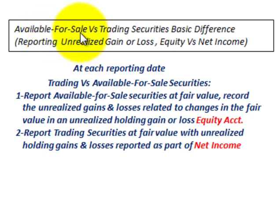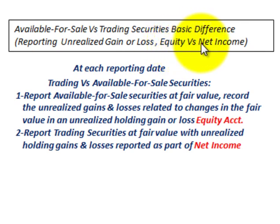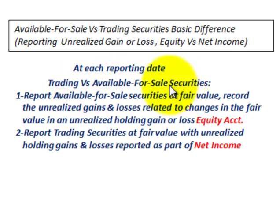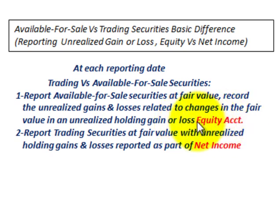What we're going to be looking at here are available-for-sale versus trading securities, and we're going to look at the basic difference when it comes to reporting any unrealized gains or losses on these securities. The difference is reporting them as equity versus reporting them as net income. For available-for-sale securities, you report them at fair value and record any unrealized gains or losses in an unrealized holding gain or loss as an equity account in the shareholders' equity part of the balance sheet.